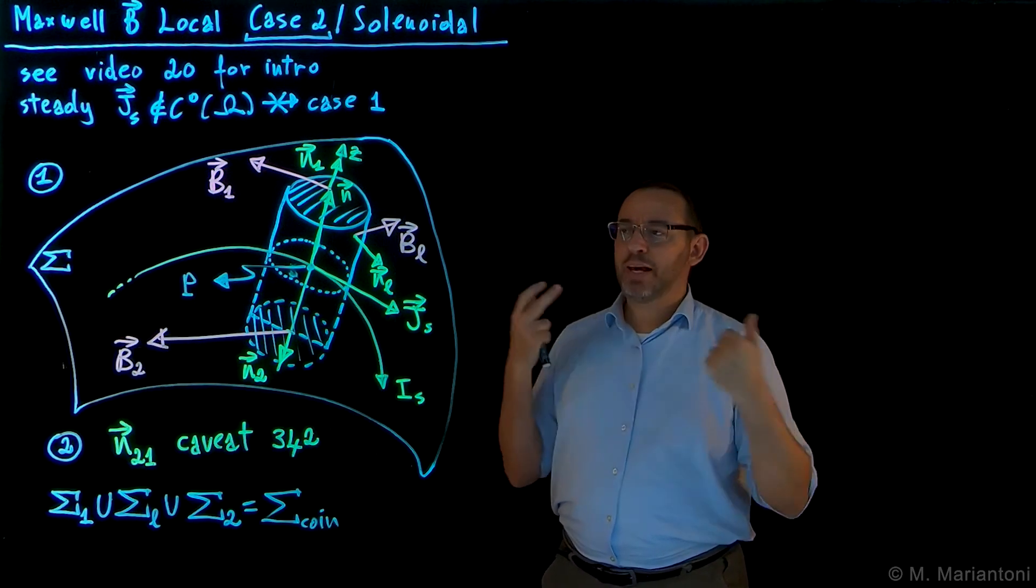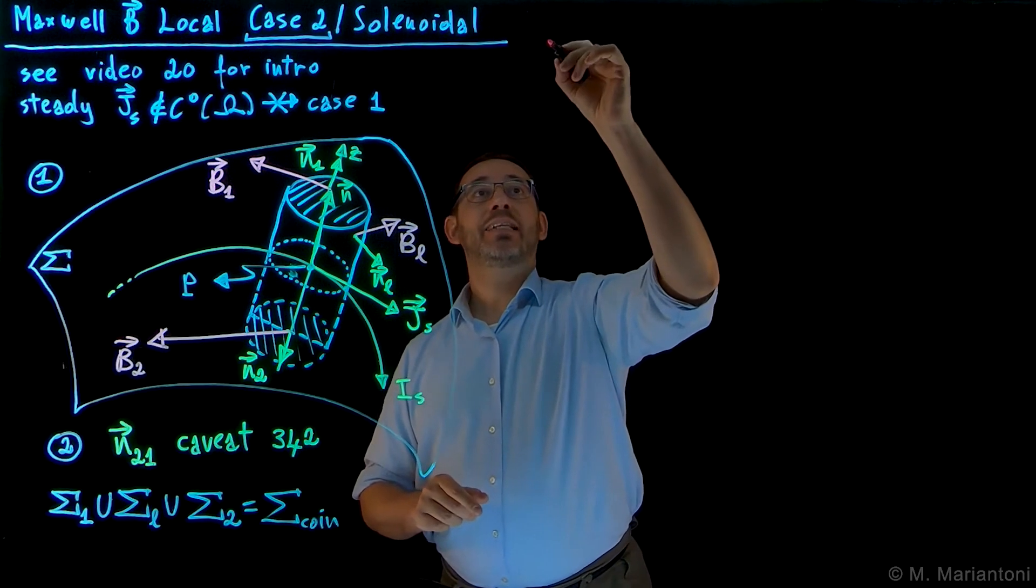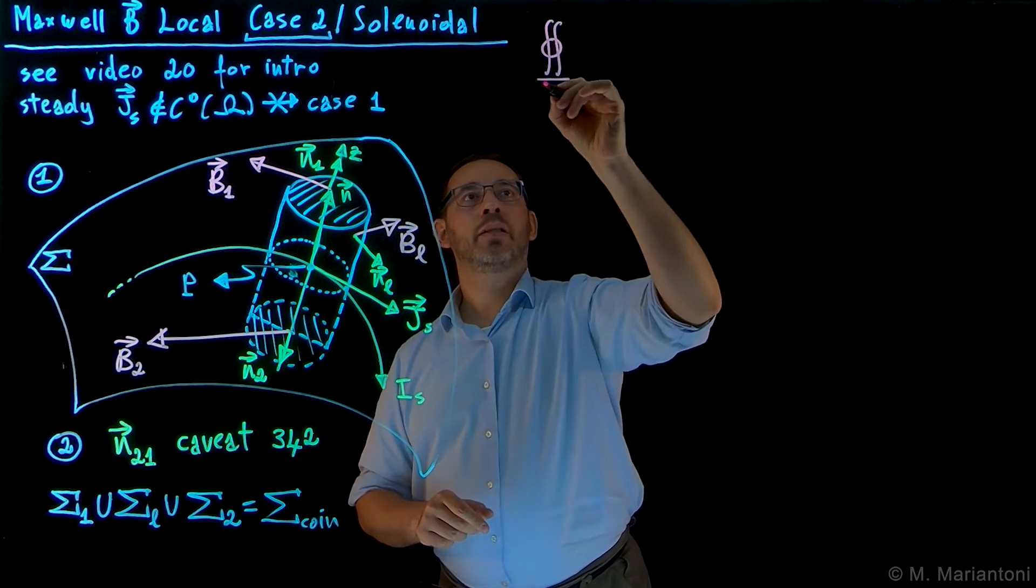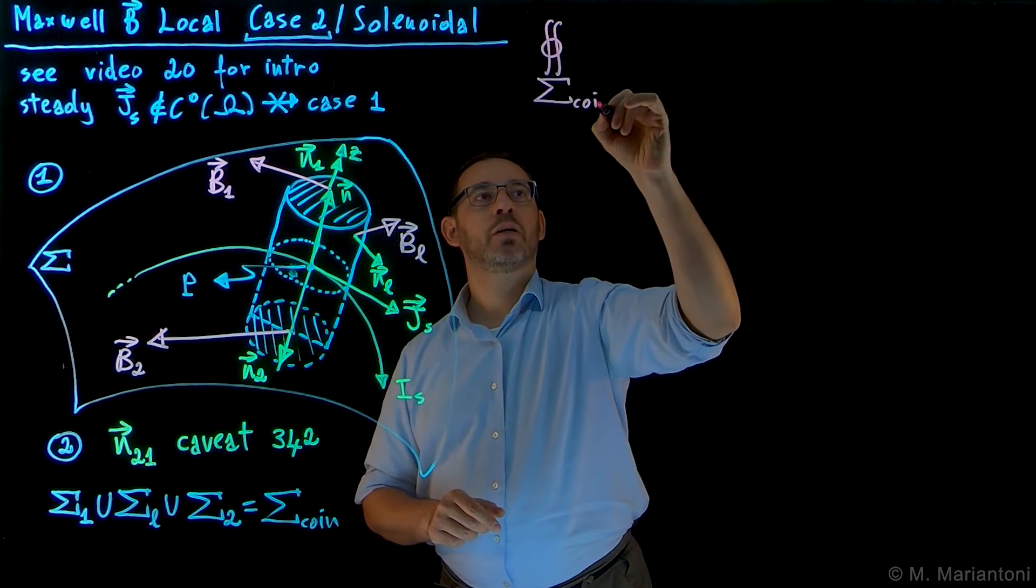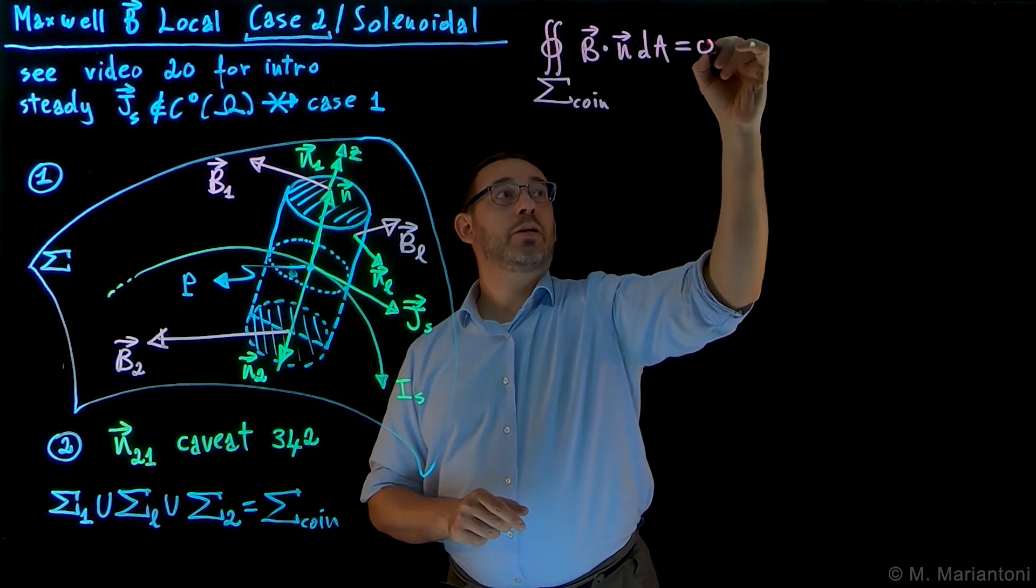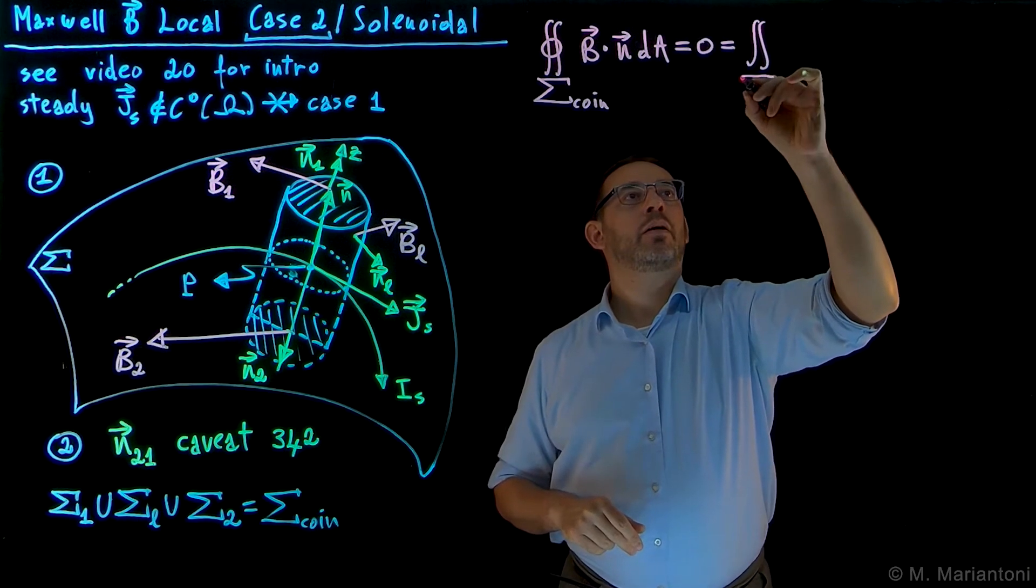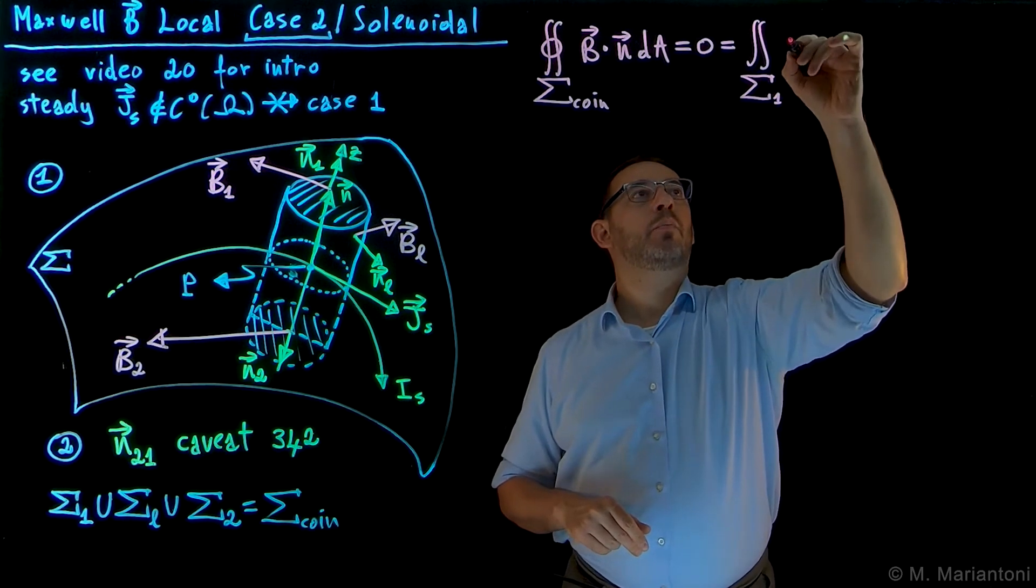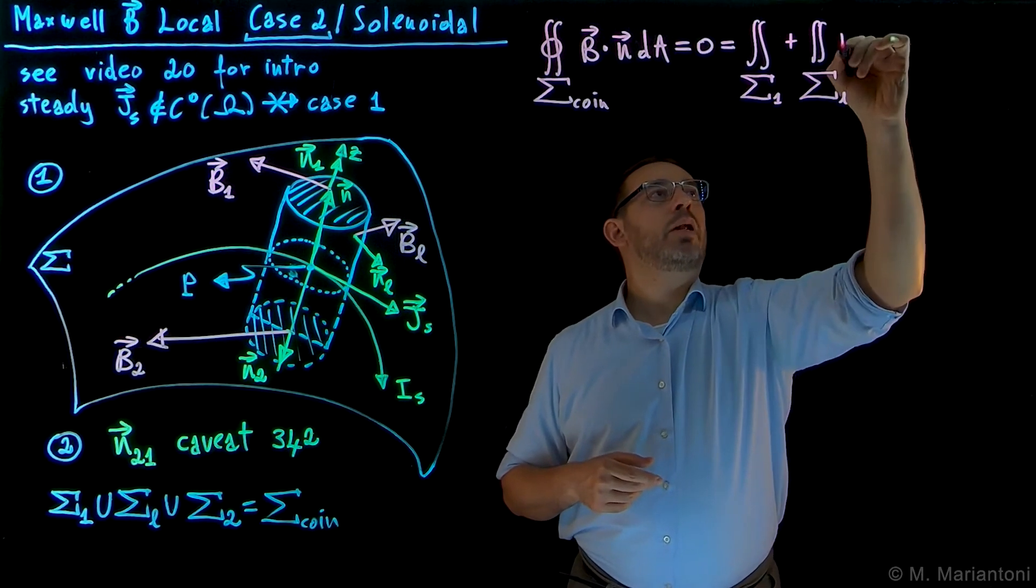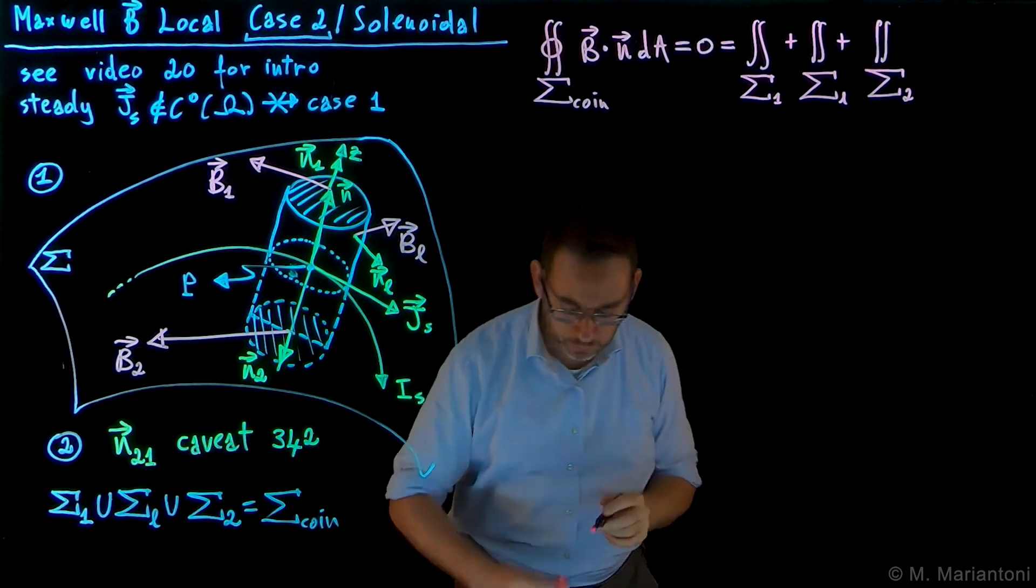We want to be in proximity. We cannot use the differential form. We can always use the integral form of the solenoidal property, which tells us that the surface integral on any closed surface capital sigma, in this case capital sigma coin, which is a closed surface, of B dot n dA, has to be equal to zero, because the field is solenoidal. And this, in this case, we can split it into three integrals, the flux through the top surface capital sigma 1, plus the flux through the lateral surface capital sigma L, plus the flux through the bottom surface capital sigma 2. All right.